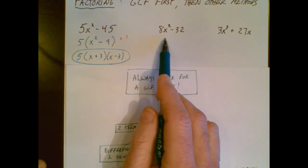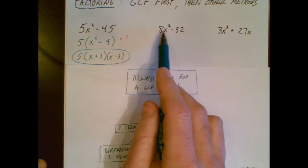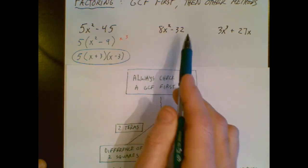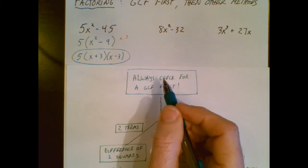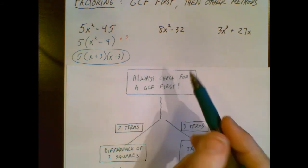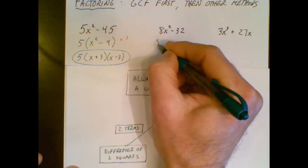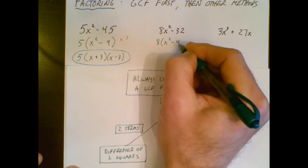I'm going to do this next problem quicker. There's no variables in common, but there is a number that will divide evenly into 8 and 32. You might think it's 2, but there's something better than that. You might think it's 4, but there's something better than that. That something better is 8. So then I get x squared minus 4.